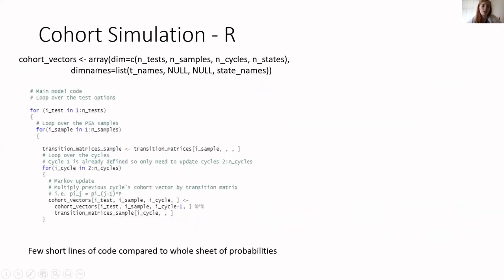And this is how I coded cohort simulation in R. So I had these cohort vectors, and there was one for every test compared for each sample, for every cycle in the model, and for each state. And in just a few short lines of code, which was really nice, I was able to produce the cohort simulation. Looping over the test compared the samples, the cycles, and then just this really simple code, which is the same as what you do in Excel, just multiplying the cohort vectors by the transition matrices. And the good thing about this as well is that this is basically the same code that you would use in most Markov models, so it's adaptable and easy to change for your own example.